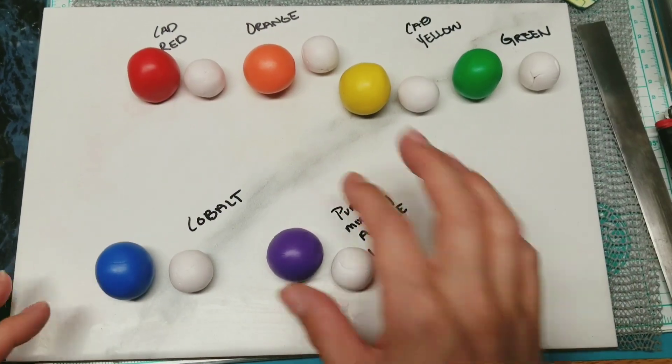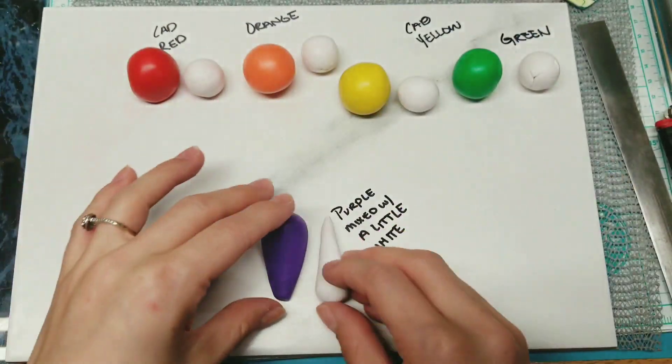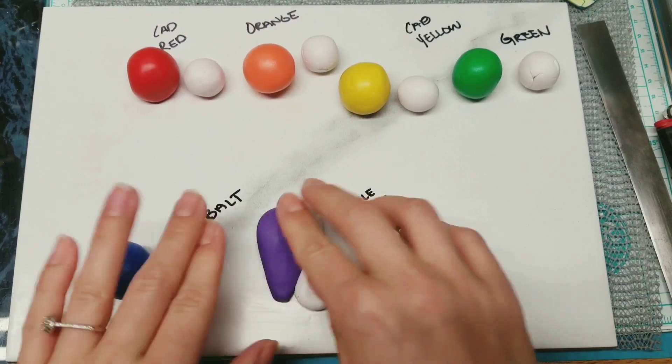And then I rolled them into about even balls, and I have little smaller balls of white, and I'm just making a teardrop blend like we normally do, flattening it out.